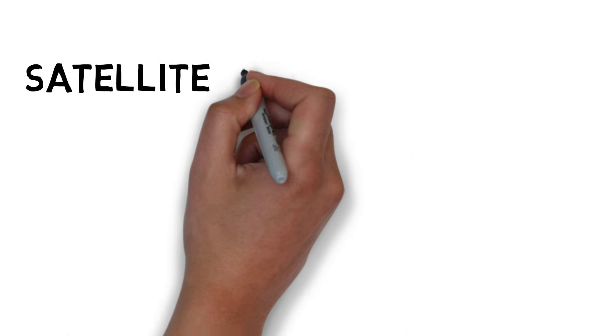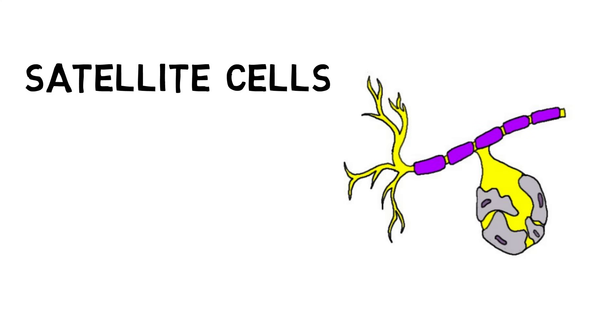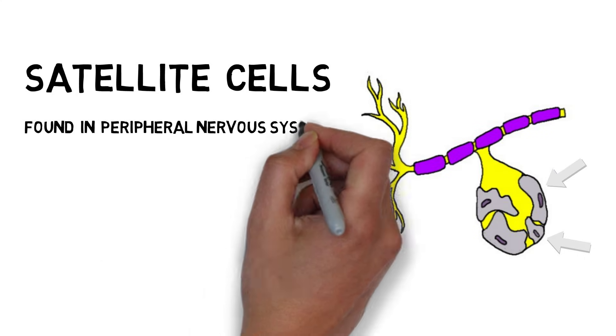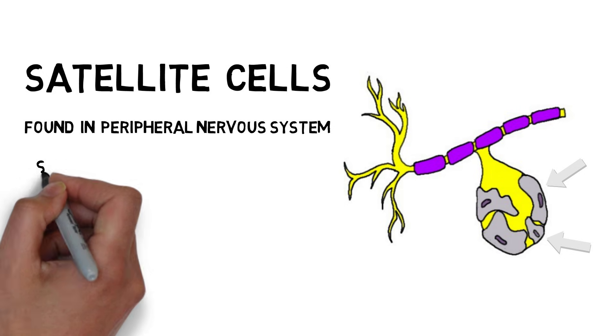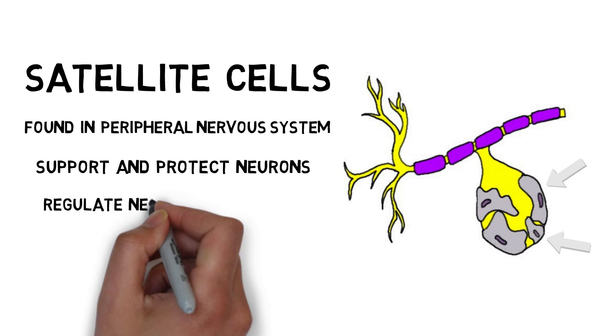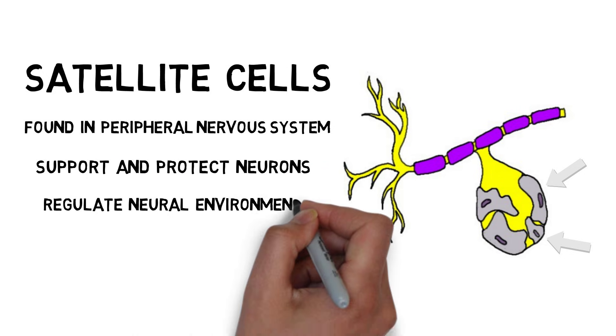Satellite cells surround neurons in some parts of the peripheral nervous system, playing a protective and supportive role. Although their role is not fully understood, it is thought they might be involved with regulating the neuronal environment of some peripheral nervous system neurons.